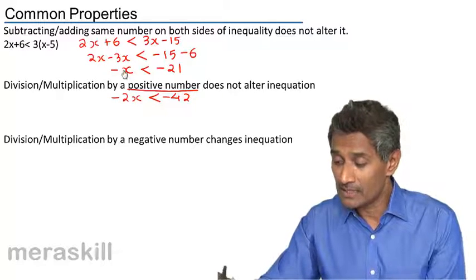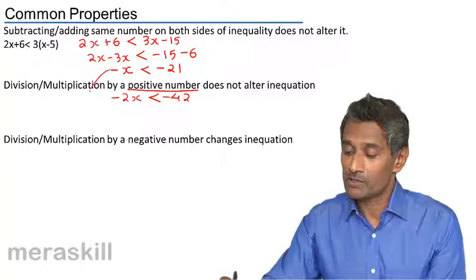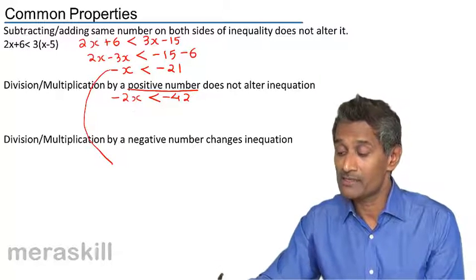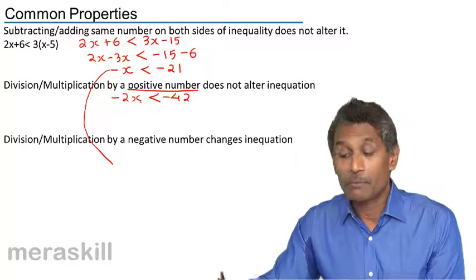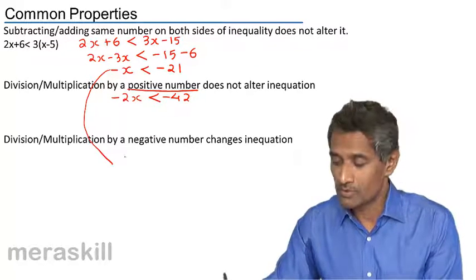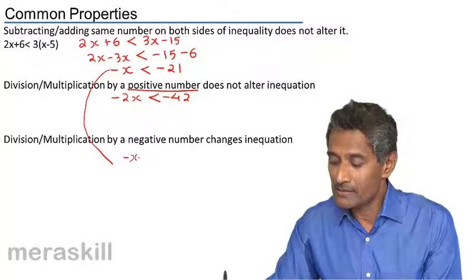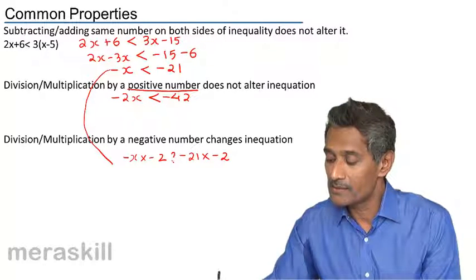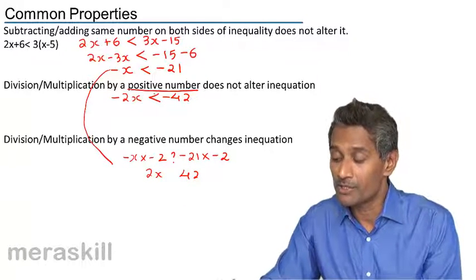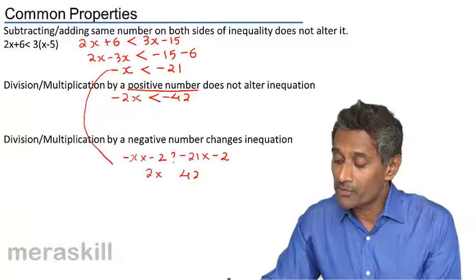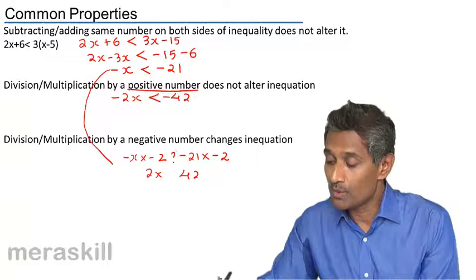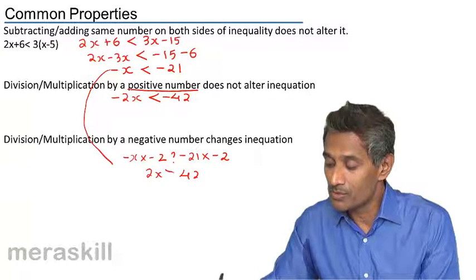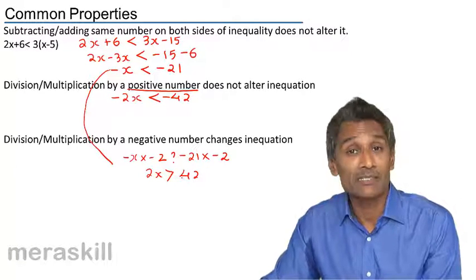Now suppose we multiply by a negative number. Taking minus x ≤ minus 21 and multiplying both sides by minus 2, we get minus x times minus 2 = 2x, and minus 21 times minus 2 = 42. Here the inequality changes: instead of less than, it becomes greater than. So 2x is greater than 42.